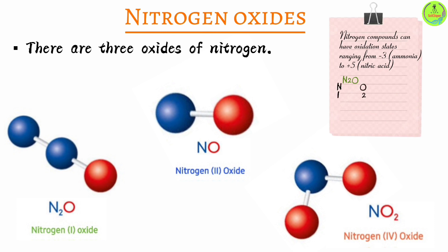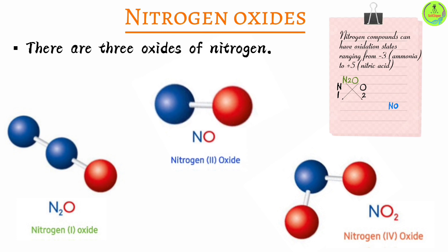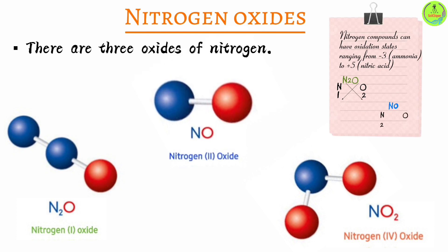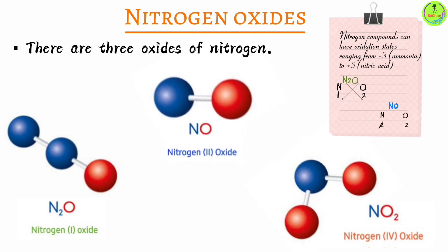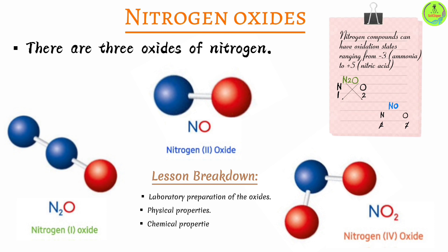To get the formulae, nitrogen in nitrogen one oxide has a valency of one and oxygen has a valency of two. When these switch you end up with the chemical formula N₂O. For nitrogen two oxide, nitrogen has a valency of two and oxygen also two, so these cancel and you get N₂O. In today's lesson we will introduce the three oxides, discuss their preparation in the lab, their physical properties, and their chemical properties.